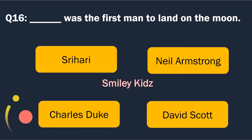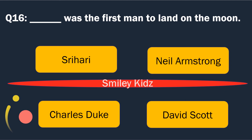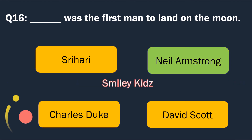Question number 16. Blank was the first man to land on the moon. Options are: Sri Harry, Neil Armstrong, Charles Duke and David Scott. The right answer is Neil Armstrong. Neil Armstrong was the first man to land on the moon.